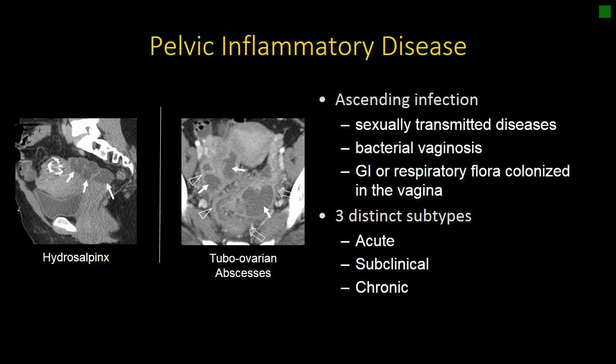On this slide, I have two examples: one of a patient with asymptomatic hydrosalpinx that was incidentally noted, which would be an example of subclinical PID. In the other example, we see complex loculated fluid collections with parametrial stranding, wall thickening of the fallopian tubes, consistent with tubo-ovarian abscesses, in a person presenting with fever, infectious symptoms, and pelvic pain of acute PID.